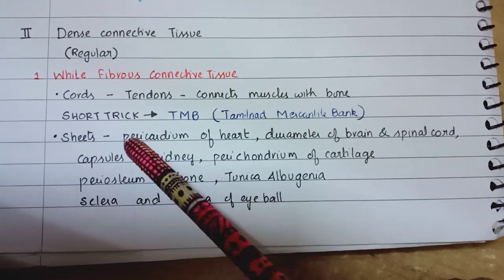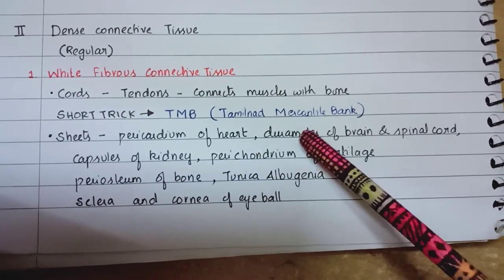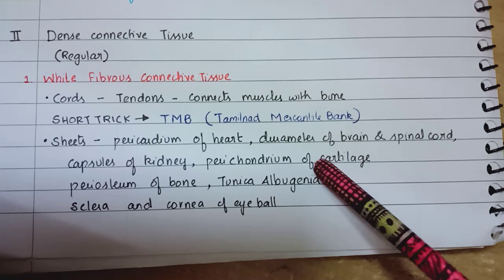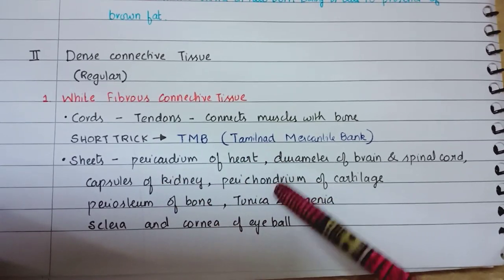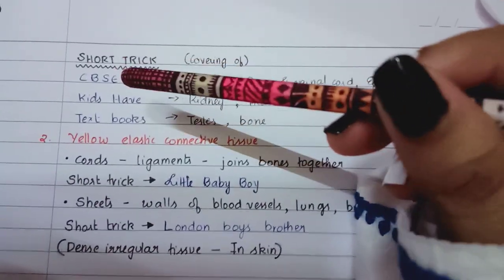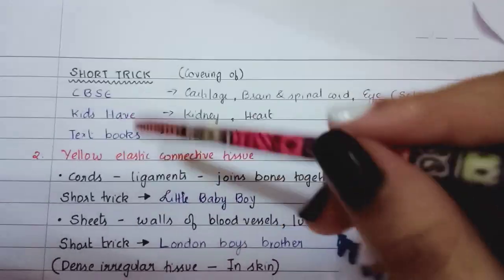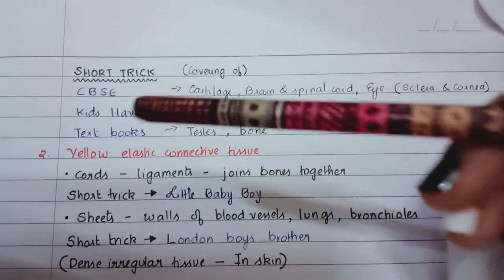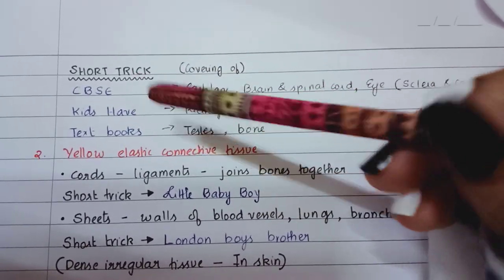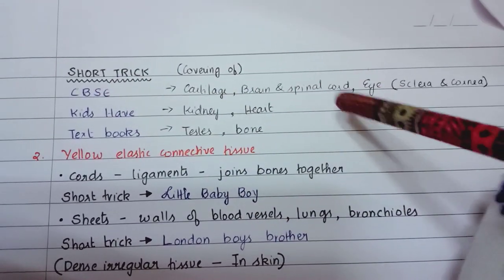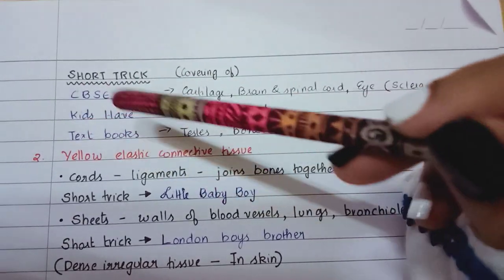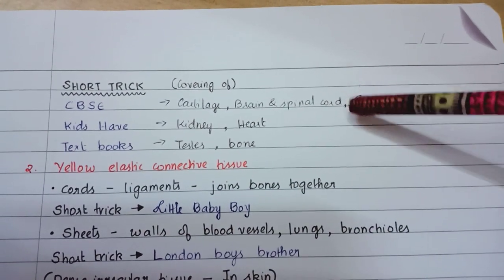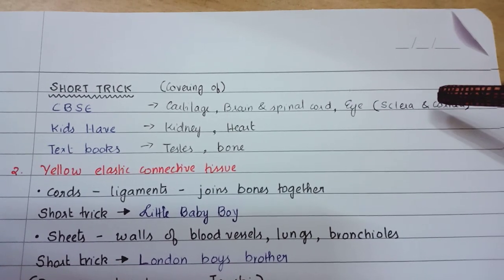Then we have sheets present in the pericardium of heart, duramater of brain and spinal cord, capsules of kidney, perichondrium of cartilage, periosteum of bone, tunica albuginea, and sclera and cornea of eyeball. The short trick is: CBSE Kids Have Textbook. C for cartilage, B for brain, S for spinal cord, E for eye - sclera and cornea are inside E. Kids for kidney, Have for heart, Textbook for testes and bone.